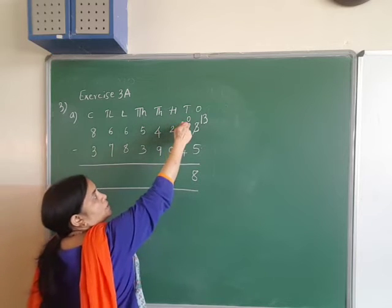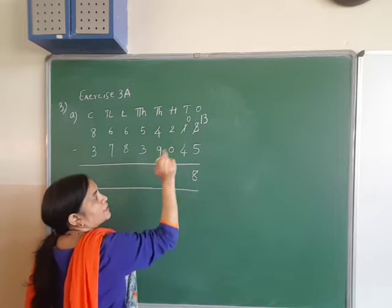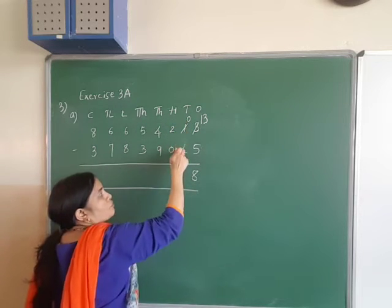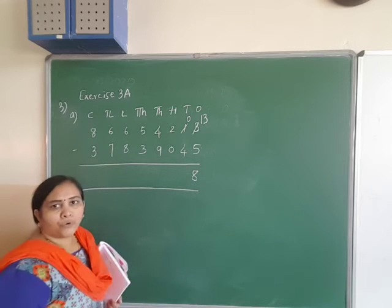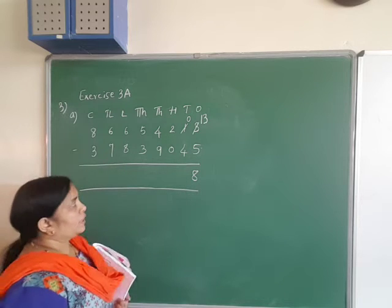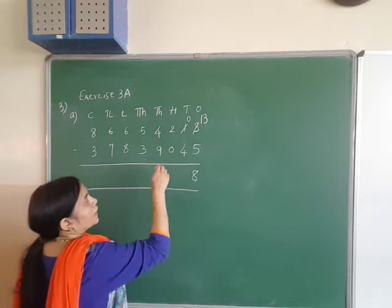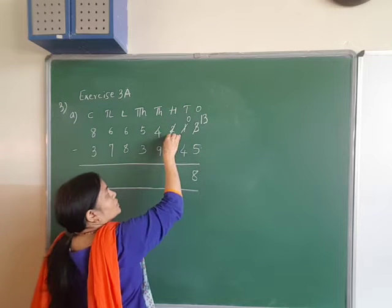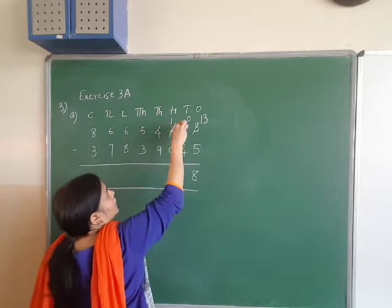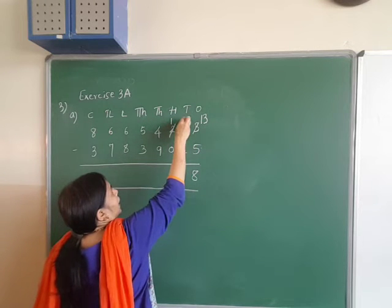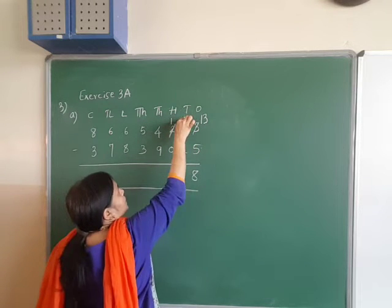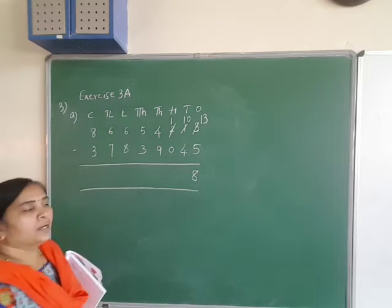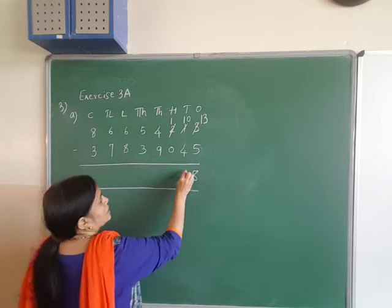Now here it is 0 minus 4 — this has become 0, we cannot subtract. So again carry over 1, this will become 2, this will become 10. 10 minus 4 is 6.